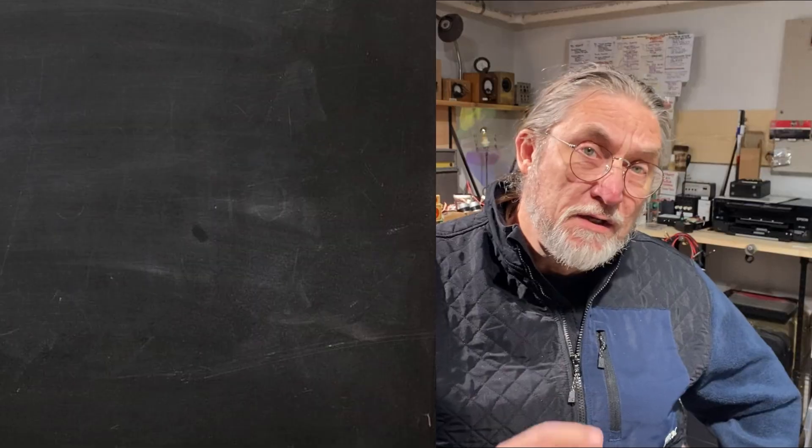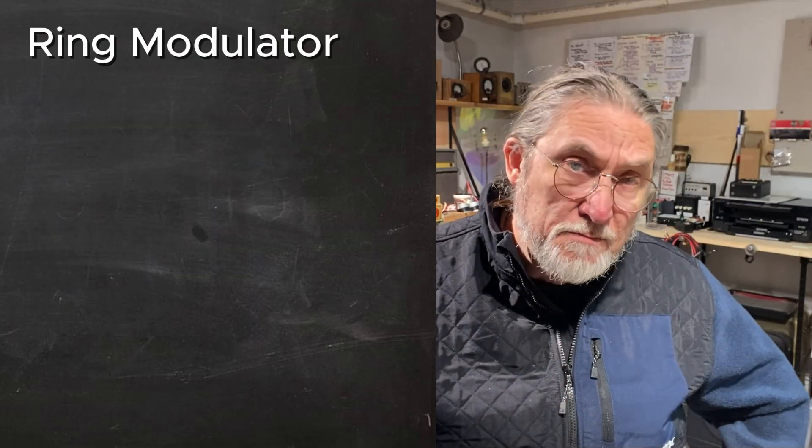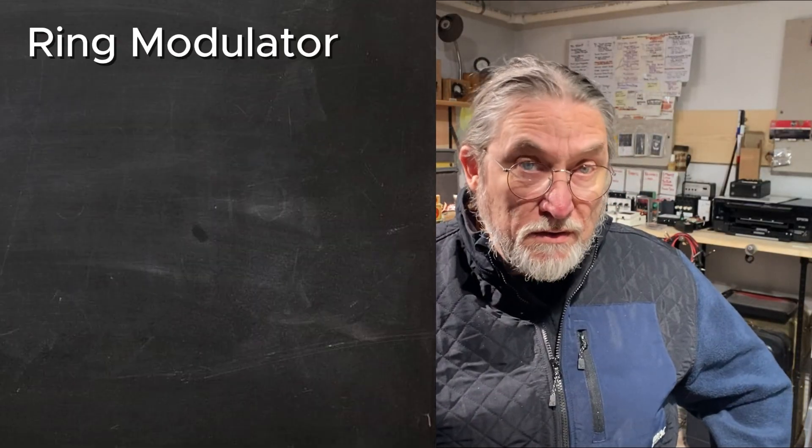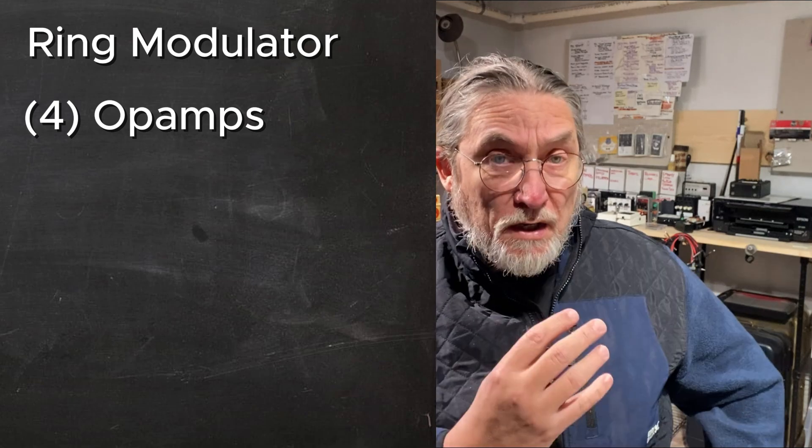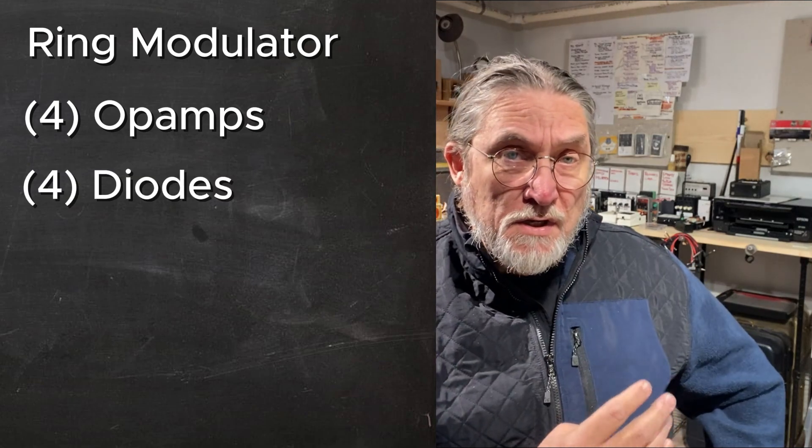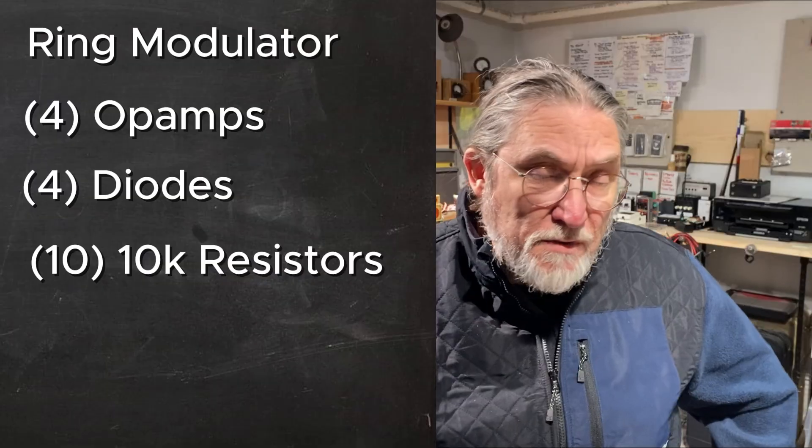Now for this video I'm making a ring modulator from just a few components, namely four op amps and four diodes and a handful of some common resistors. Now ring modulation is interesting because it mathematically multiplies the two signals.